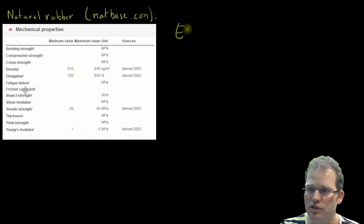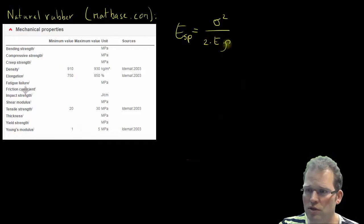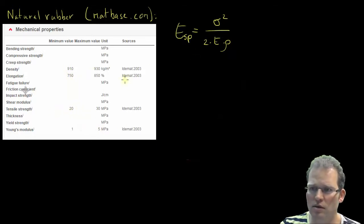All the numbers we need to fill in our specific energy formula, which was the stress squared divided by 2 times the Young's modulus times the density. Young's modulus we have here, density, and we have some numbers about stress.